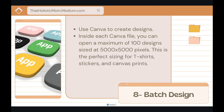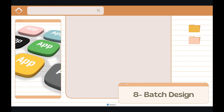Step eight and the last step is batch designing. Batch designing is super important — it helps you stay on top of the competition and stand out among the crowd. Start by using Canva to create designs. Inside each Canva file, you can open a maximum of 100 designs, each sized at 5,000 by 5,000 pixels — the perfect size for t-shirts, stickers, and canvas prints.